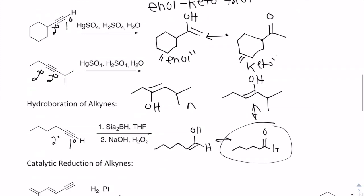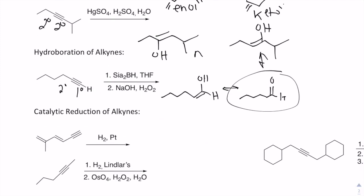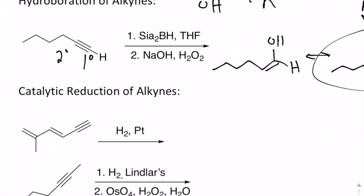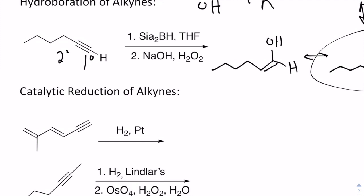For catalytic reductions of alkynes, we can selectively choose different reagents to either reduce the alkyne all the way to the alkane, or selectively to the E or Z alkene. H2 with platinum, palladium, or nickel as a metal catalyst reduces all pi bonds — taking the alkyne all the way to the alkane with no selectivity.